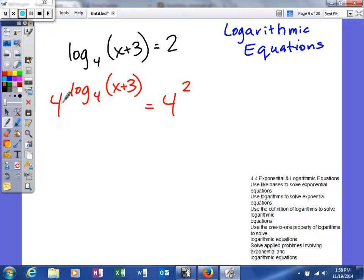The reason it will cancel is the base of our exponential expression and the base of the log are the same. So this will cancel and leave us x plus 3 equals 4 to the second power. We know 4 to the second power is 16. Then we can subtract 3.